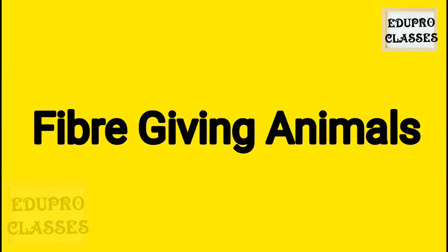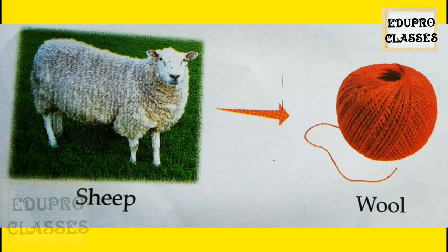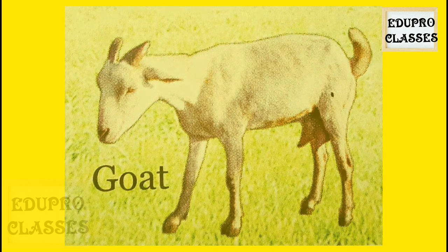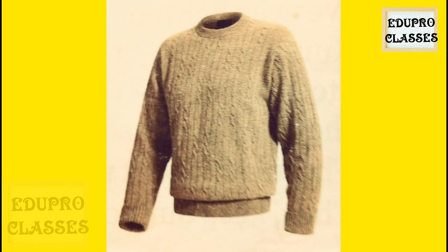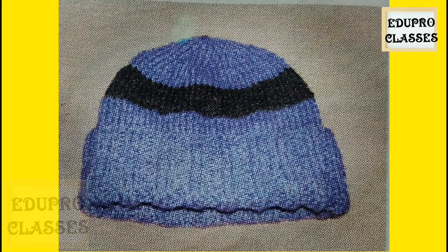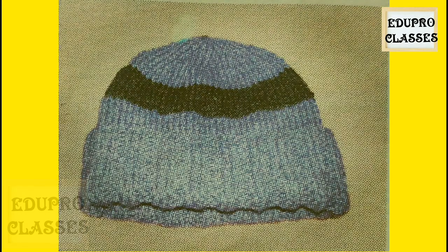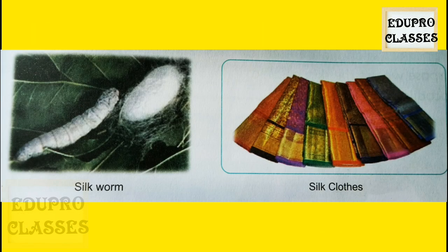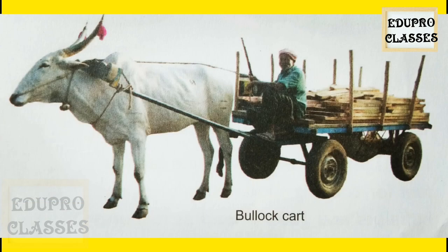Fiber-giving animals: Sheep and goat give us wool. Wool is used to make woolen clothes like sweaters, caps, mufflers, etc. We get silk from silkworms. Silk is used to make silk clothes.